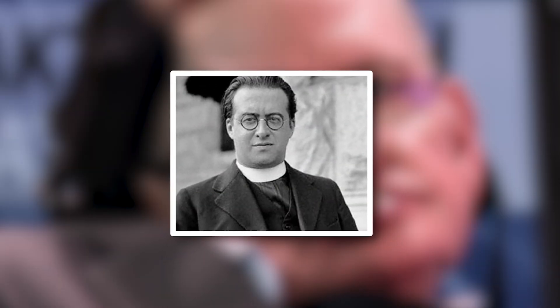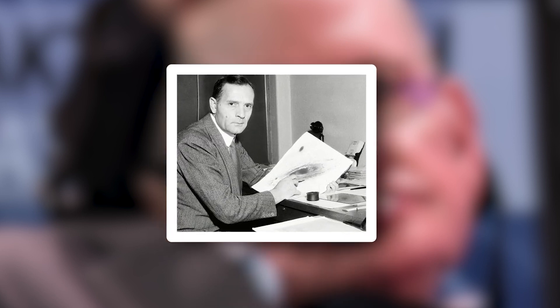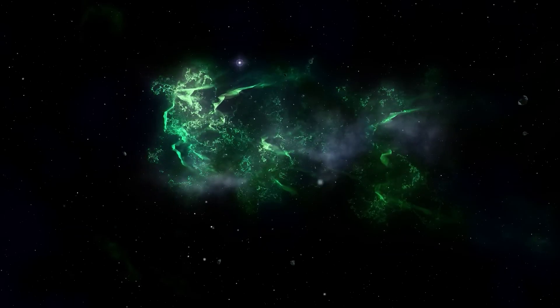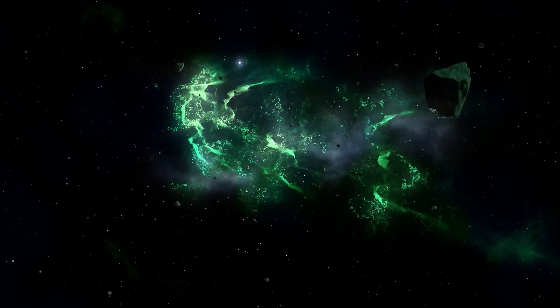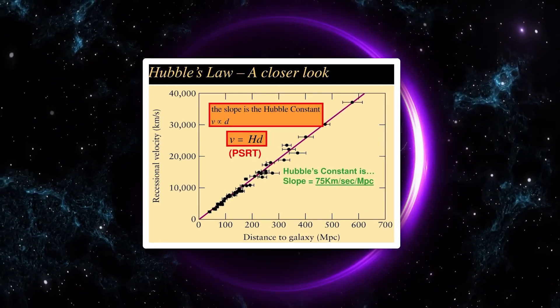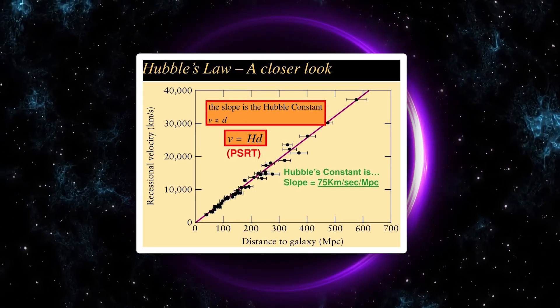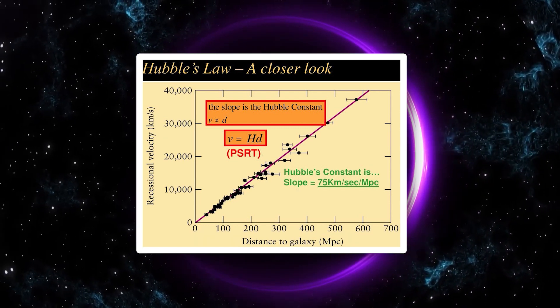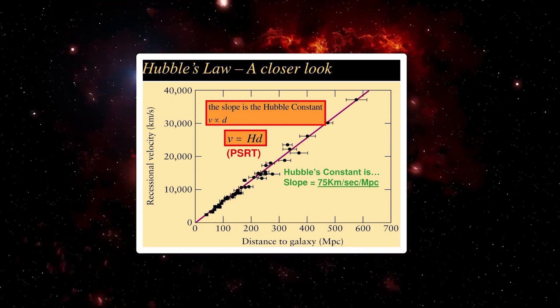George Lemaitre proposed the Big Bang theory, and Edwin Hubble's discovery first supported it. In the 1920s and 30s, Edwin Hubble found out that the universe is expanding, with galaxies moving away from each other at a velocity given by an expression known as Hubble's law. V equals H asterisk R. In this expression, V represents the galaxy's recessional velocity.